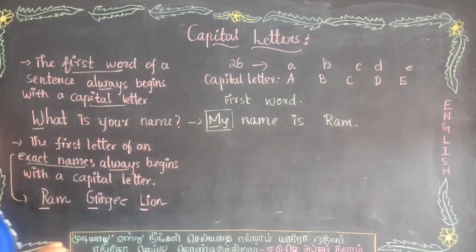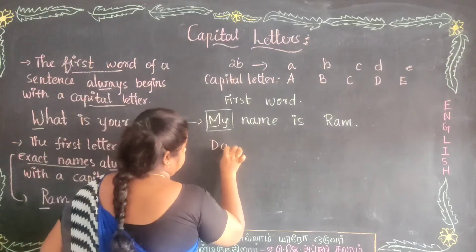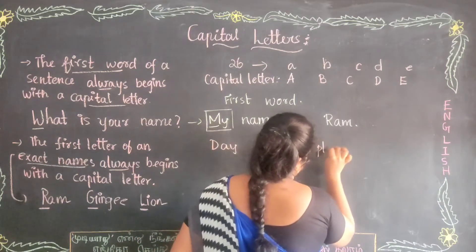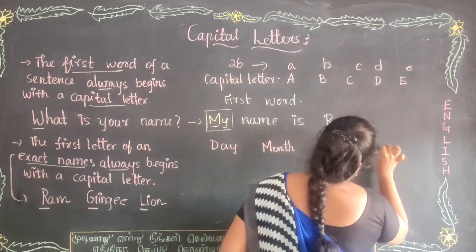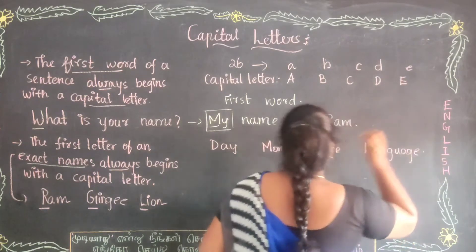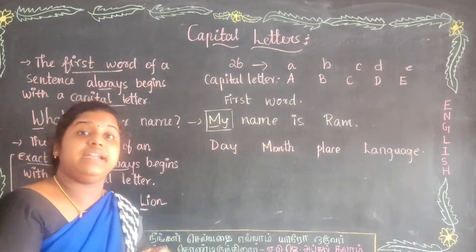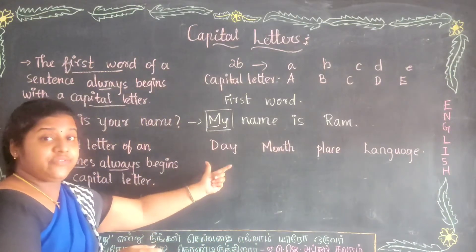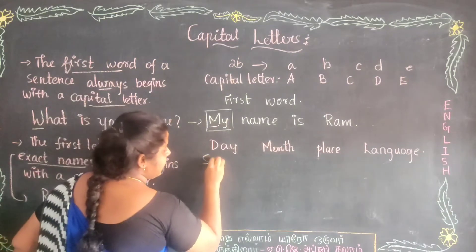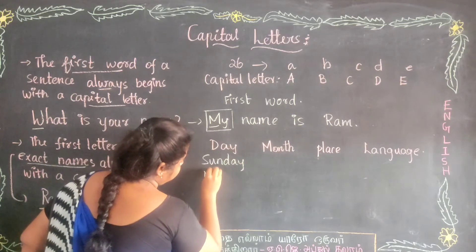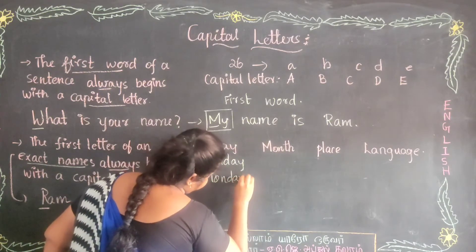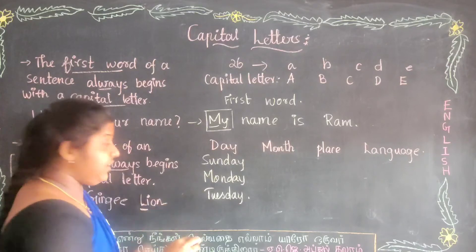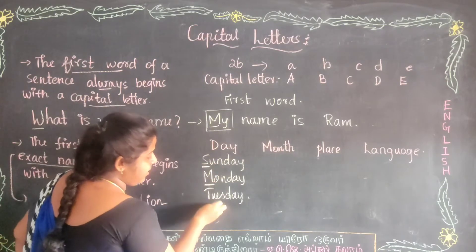We also use capital letters for days of the week. Monday, Tuesday, Wednesday, Thursday, Friday — these are all days of the week. So you have to use capital letters for them. Sunday, Monday, Tuesday — the first letters S, M, T are all written in capital letters.